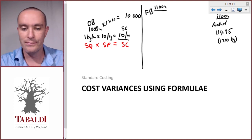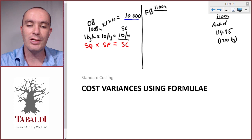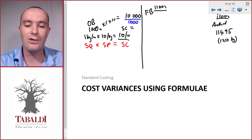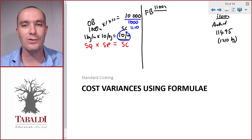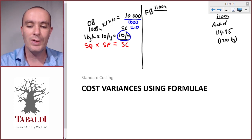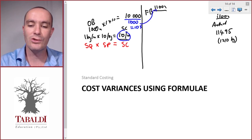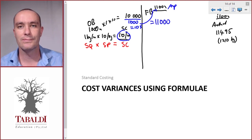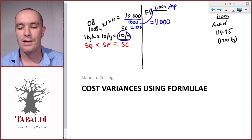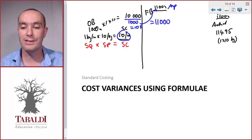To flex the budget, take the cost of the original budget divided by the units of the original budget to get the standard cost per unit, then multiply by the actual units produced. That gives a flexible budget value of $11,000.